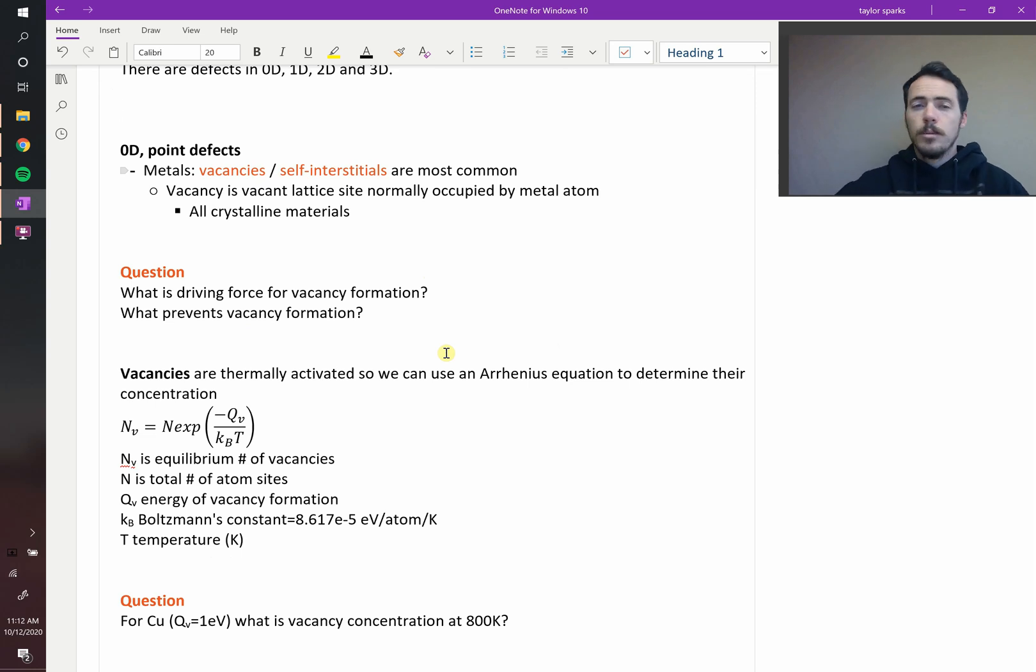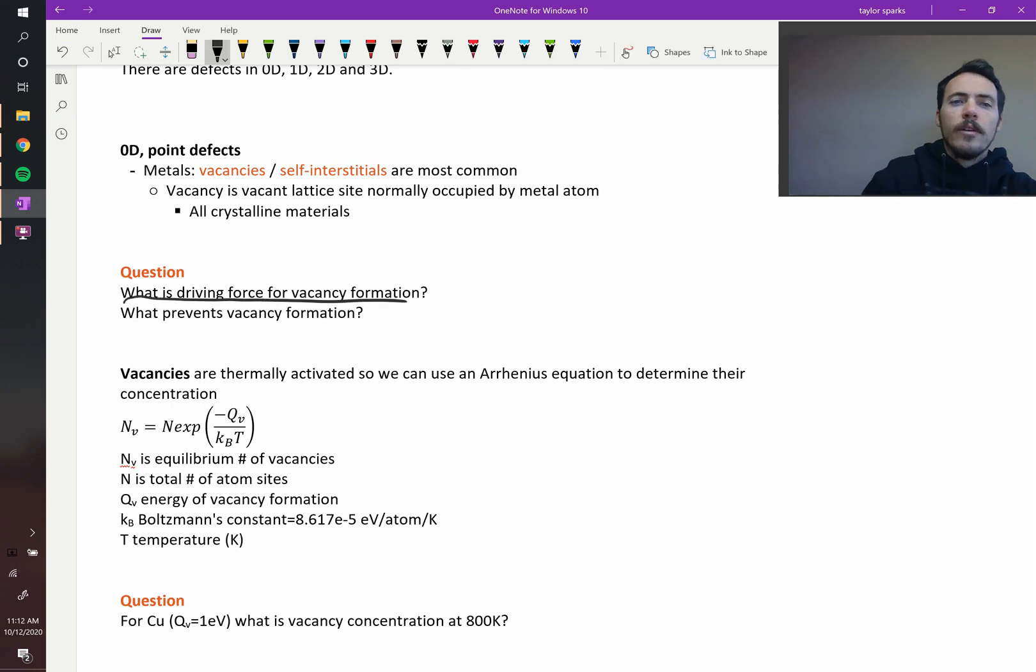A vacancy is very simple. It's a spot in the lattice which would normally be occupied by an atom, but it's now empty. And essentially, all crystalline materials have defects. They all have vacancies. Now why? Why should something have a vacancy? The question is, what should be the driving force? Think of this in terms of driving force. What should be causing that? Well, in driving force, we know that's Gibbs free energy. We know that Gibbs free energy is a sum of the entropy contribution and the enthalpy contribution.